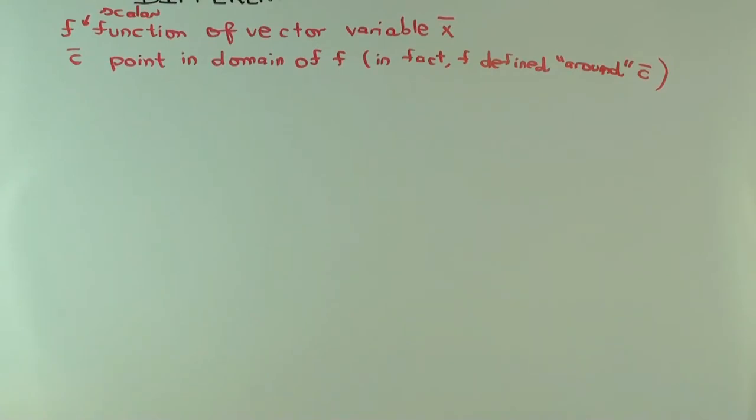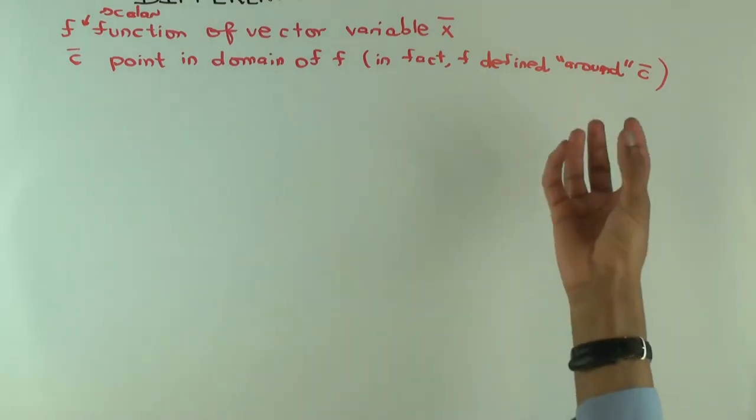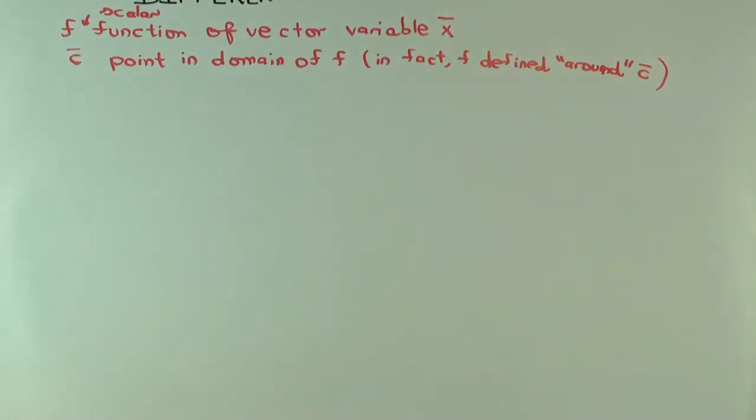Above radius. Yeah, so f should be defined in some ball of some positive radius about c. So it's not just defined at c, it's defined around c. Okay, so now what would we want to do in order to take the derivative? Well, we want to take a limit of a difference quotient, but that's not quite possible.